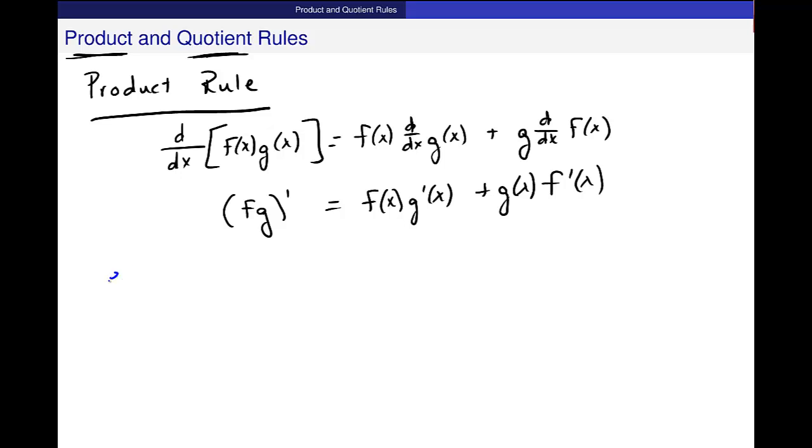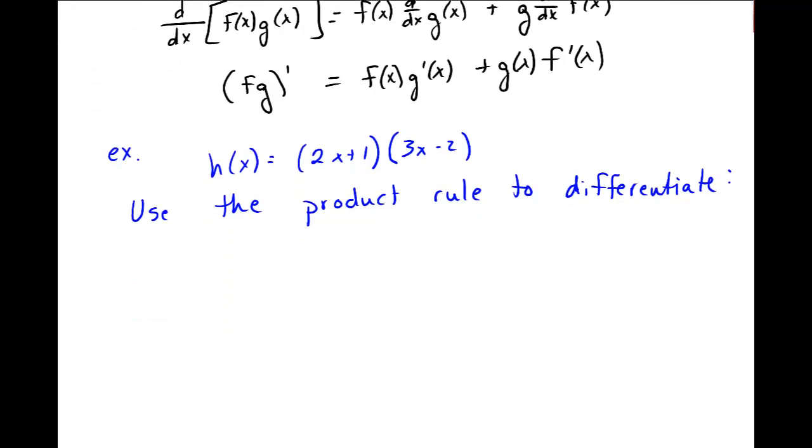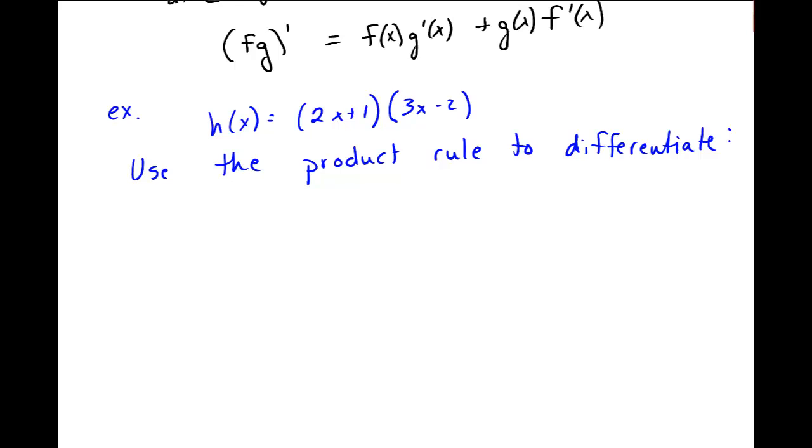Let's do an example using this so that you can see how it goes. So let's say I have this function h of x, which is 2x plus 1 and here 3x minus 2. And I want to use the product rule to differentiate. I have two pieces that are multiplied together. So I have some function f of x, that's this 2x plus 1, and some function g of x, that's 3x minus 2.